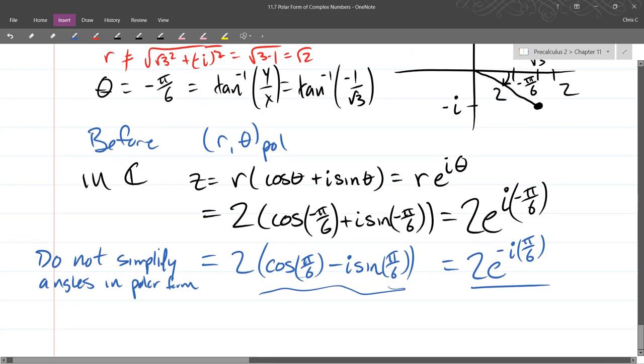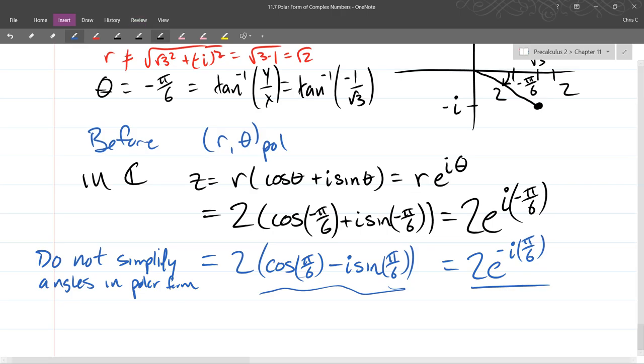You can choose. Some WebWork questions will say standard form. Some WebWork questions will say Euler form. Either way, they have the exact same information. When you're taking your quiz slash final exam, I won't be picky about what form you use. I can read either form. Just don't simplify. Make sure I can see the r and the theta very clearly.